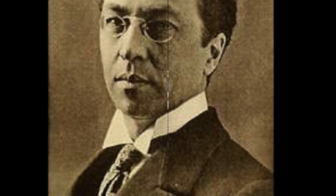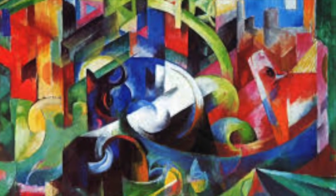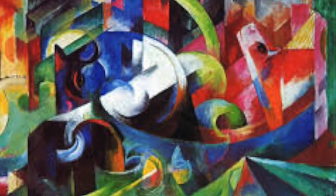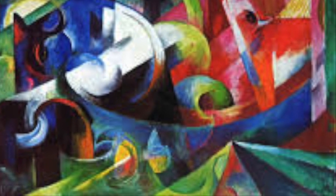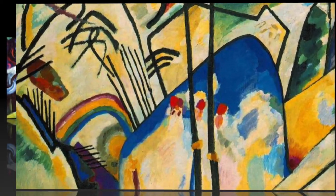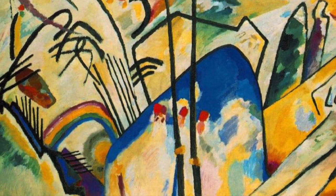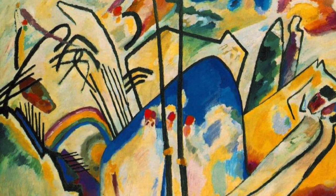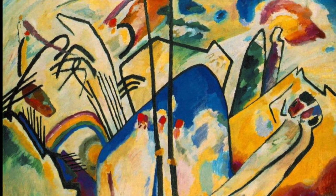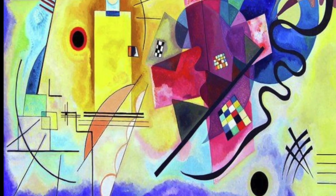Kandinsky was born in Russia in 1866. Growing up, he enjoyed music and learned to play the cello and the piano. Kandinsky always loved the beauty of nature and said that even as a child, the colors of nature dazzled him. Both music and colors would have a huge impact on his art.